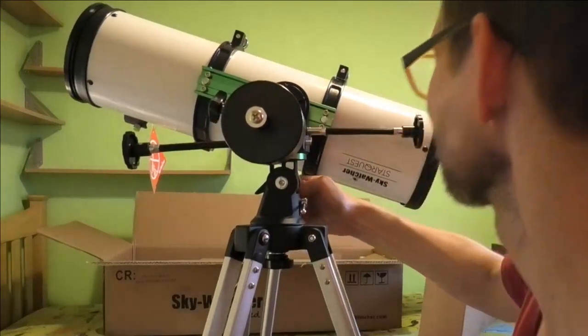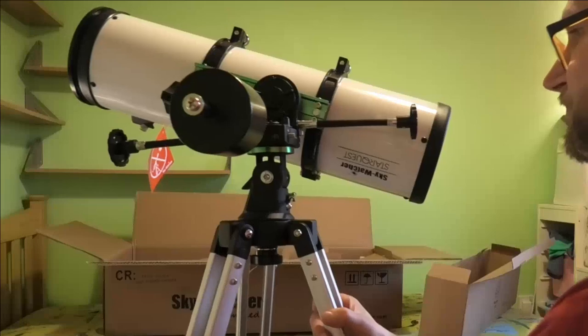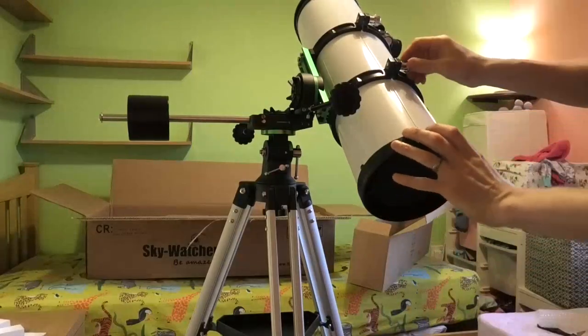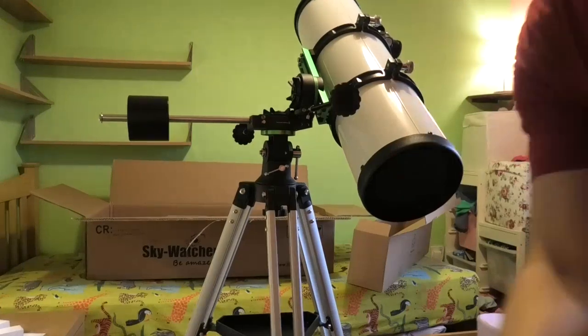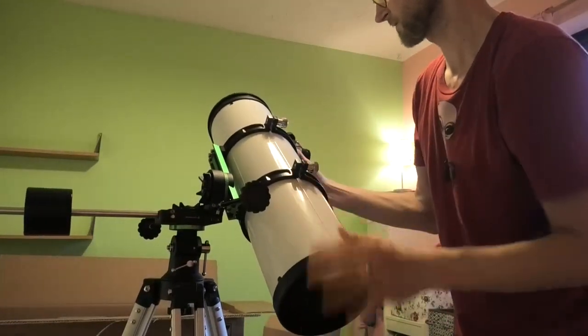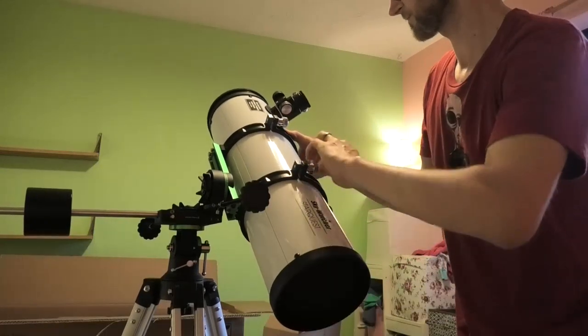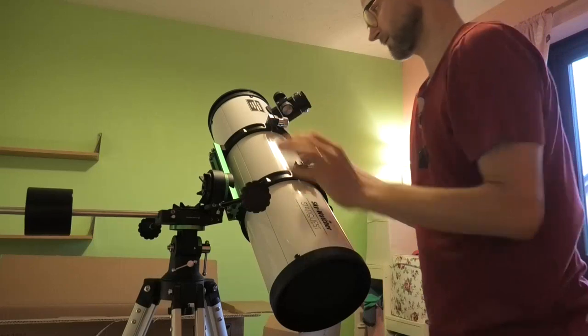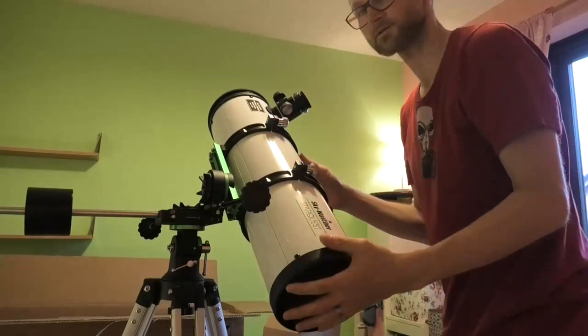Oh yes, that is a true alt-azimuth mount now. You can turn the optical tube, let's put that up there. You can turn the optical tube in the rings and then you can just observe like so and then just move it left and right and then up and down, simple.